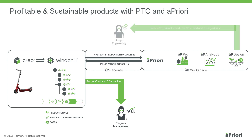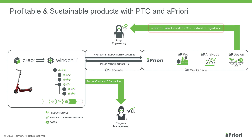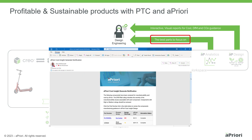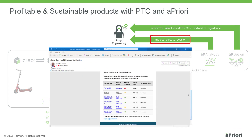Design teams now have more information to support design decisions, with interactive visual reports showing cost and CO2 drivers that they could influence. Apriori also provides data analytics to identify the components that provide the best opportunity for improvement, or most in need of attention with respect to cost, CO2 and manufacturability.